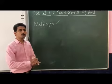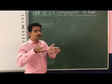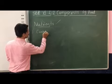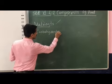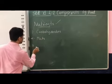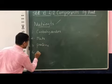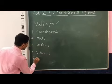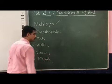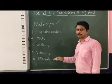There are various types of nutrients present in our food, and we can group them into various categories. The first category is carbohydrates, then fats, then proteins, then vitamins, and then minerals. So we can classify nutrients into these five categories: carbohydrates, fats, proteins, vitamins, and minerals.